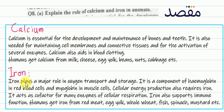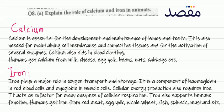What does iron do? Iron plays a major role in oxygen transport and storage. Iron is present in hemoglobin, which is a protein found in red blood cells. Hemoglobin binds to oxygen and transports it throughout the whole body.